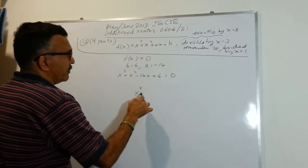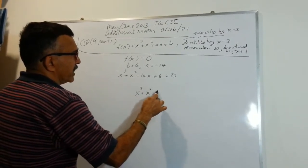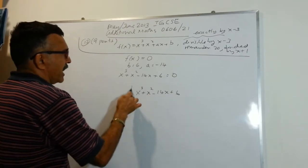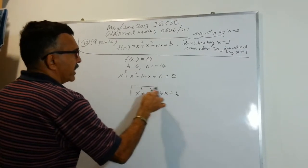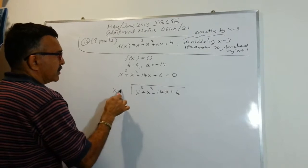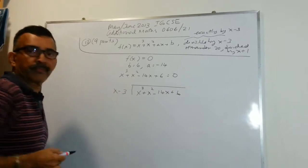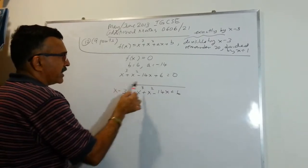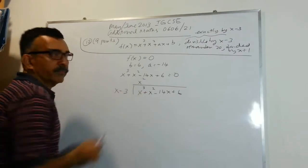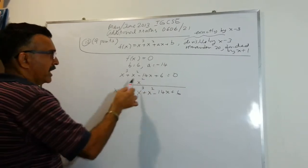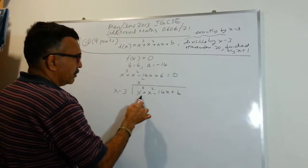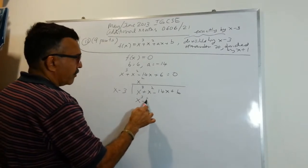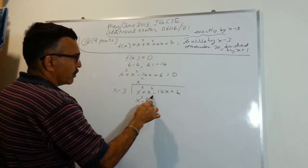Follow carefully: we have x cubed plus x squared minus 14x plus 6, and we are going to divide this by x minus 3. Take your x cubed, divide by x, you will get x squared. x squared times x will give x cubed; x squared times minus 3 will give minus 3x squared.